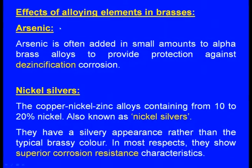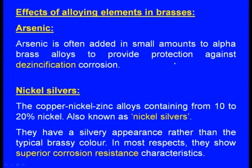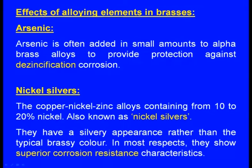Other alloying elements in brass: arsenic is often added in small amounts to alpha brass alloys to provide protection against de-zincification corrosion. Nickel silvers are copper-nickel-zinc alloys containing from 10 to 20 percent nickel, also known as nickel silvers. They have a silver appearance rather than the typical brassy color, and in most respects they show superior corrosion resistance characteristics.